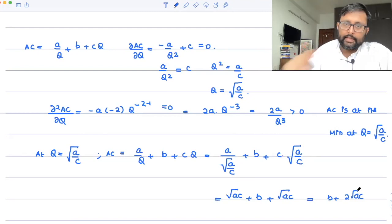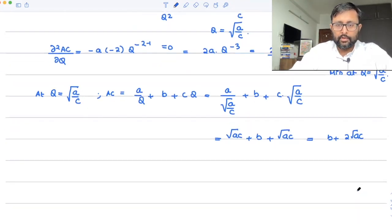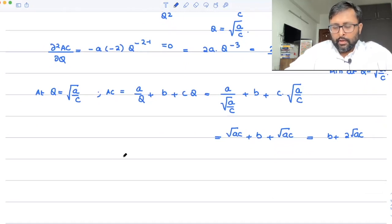So this is nothing but b + 2√(ac). So yes, your AC is coming out to be the way it's stated in the question. Let us just check whether MC is also the same amount.